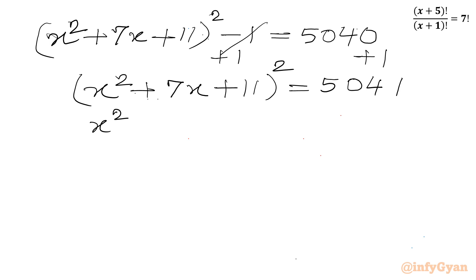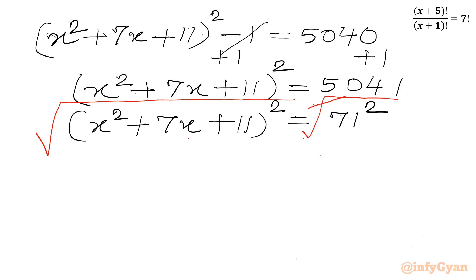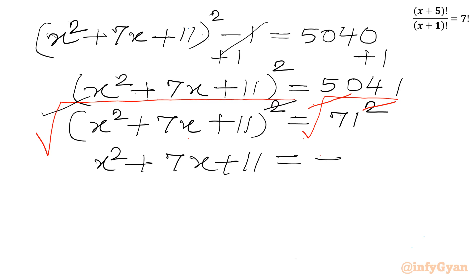We note that 71² = 5041. Taking square roots of both sides, the square root and square cancel, giving us x² + 7x + 11 = ±71.